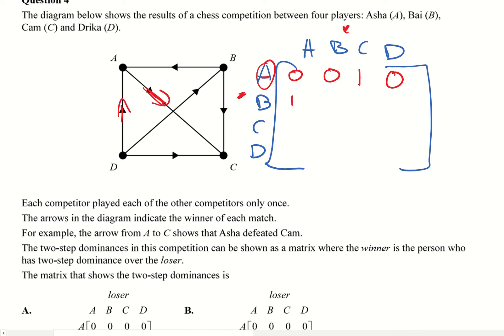Bae did beat Asher. Bae did not beat themselves. Bae did beat Cam. And Bae did not beat Dryker, so zero. And I'm just going to quickly do the rest. If you look for Cam, everything's coming towards Cam and can't beat themselves. So they all get a zero across there. And Dryker, they're beating A, they're beating C, they're beating B, and they can't beat themselves. So basically it's one, one, one, and zero. So that is essentially our first step of dominance.